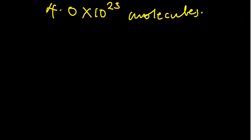The other question asked us to find the number of atoms — we already found the number of molecules. For every 32 grams, there are 4.0×10²³ ozone molecules. Per every single ozone molecule, O₃, how many oxygen atoms are there?